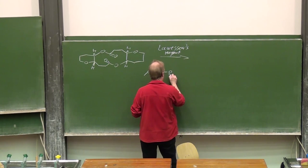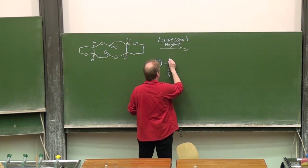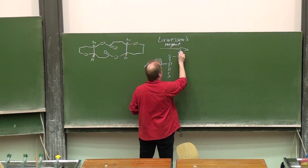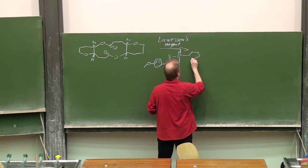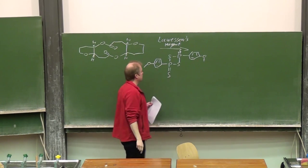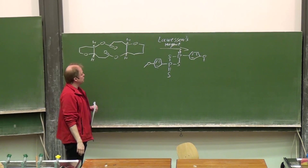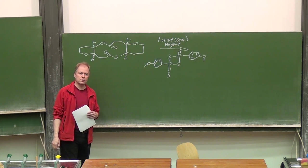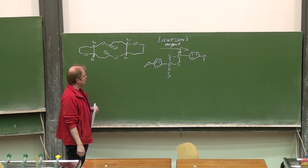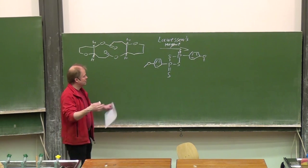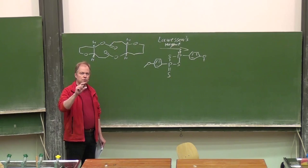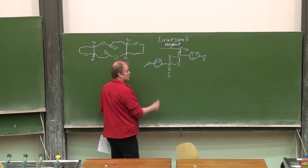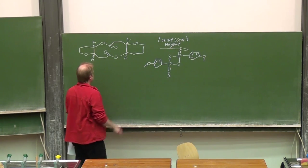Let's draw the structure. In hydrolysis of Lawsson's reagent, of course, hydrogen sulfide will evolve. With this reagent you can nicely achieve an oxygen-sulfur exchange at a carbonyl. It's a bit related to Wittig-type reactions where you exchange the oxygen of a carbonyl group — here by sulfur. And this works rather nicely twice in this case.